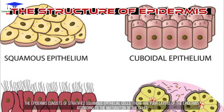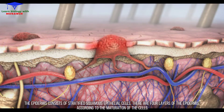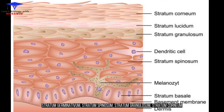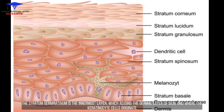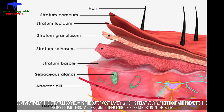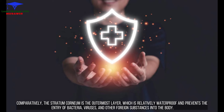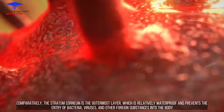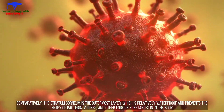The epidermis consists of stratified squamous epithelial cells. There are four layers of the epidermis according to the maturation of the cells: stratum germinativum, stratum spinosum, stratum granulosum, and stratum corneum. The stratum germinativum is the innermost layer, which adjoins the dermal layer of the skin and where the keratinocyte cells originate. The stratum corneum is the outermost layer, which is relatively waterproof and prevents the entry of bacteria, viruses, and other foreign substances into the body.